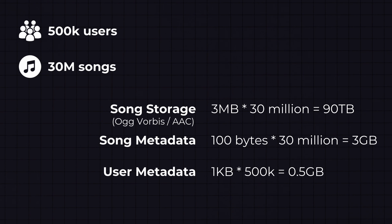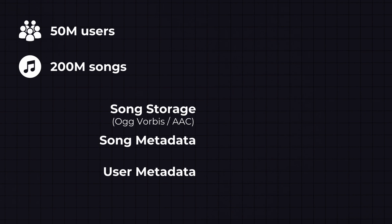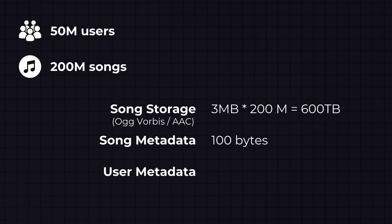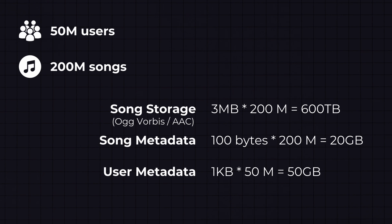Now, what if we scale from 500,000 to 50 million users and 200 million songs? Our blob storage needs to store 7× more data — around 600 terabytes. Song metadata becomes 100 bytes × 200 million = 20 gigabytes, and user metadata increases to 50 gigabytes.